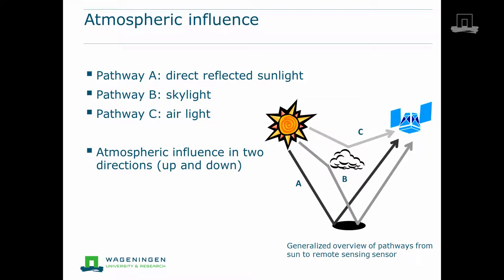Without going into too much detail, there are a number of fluxes important in describing the atmospheric influence for optical images. The incoming irradiation from the sun can be separated into a direct flux, A, without interference by the atmosphere, and a diffuse flux that reaches the surface after having interactions in the atmosphere, indicated with B. The latter is called skylight. Part of the incoming flux can even be scattered in the atmosphere, indicated by C, and back towards the sensor without ever being in contact with the surface. This is called aerolight.